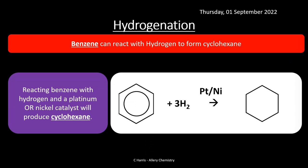Let's start with hydrogenation — probably the easiest one. Benzene can react with hydrogen to form cyclohexane. We use a platinum and nickel catalyst to do this and, as a result, we produce cyclohexane. You need a lot of energy to do this because benzene is quite stable, so adding hydrogen to it is quite tricky. Nonetheless, this is the reaction you need to be aware of.